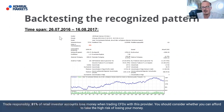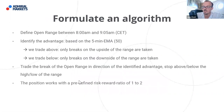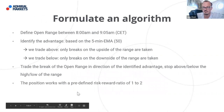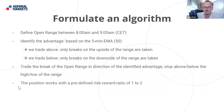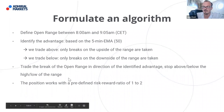The more data you have, the more you can see whether the strategy performs well under different market conditions. This is the starting point for an automation of your trading, because these rules can easily be formulated. You can see it's four steps: define the range, identify the advantage, trade the break in the direction of the advantage, set your stop and take profit. That could be the starting point of an automation of your trading following a predefined algorithm.